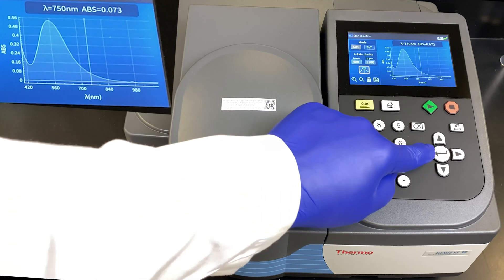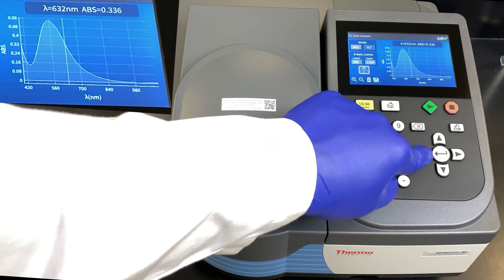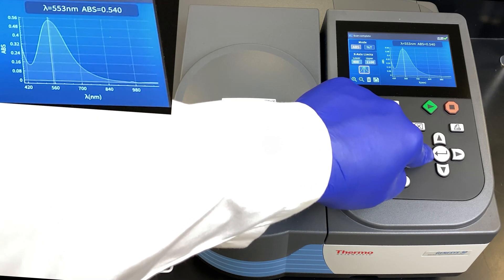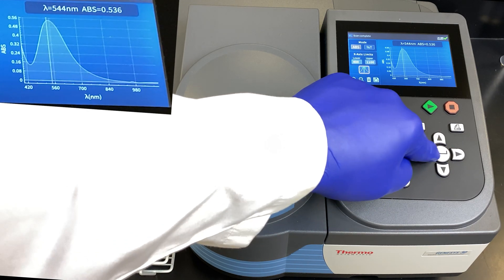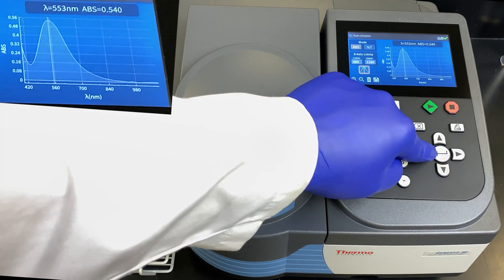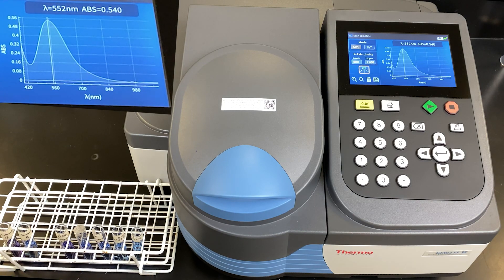Let's find the Amax by moving the cursor over. You can see we can move along wavelengths. The absorbance is going up. 0.540 appears to be our maximal absorbance. Let's find the exact wavelength. Move the cursor back and forth. It appears 552 nanometers is the Amax for this particular sample.